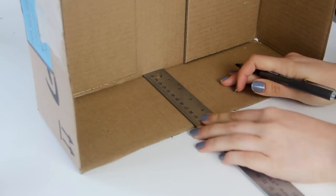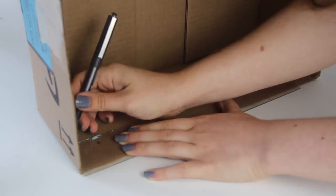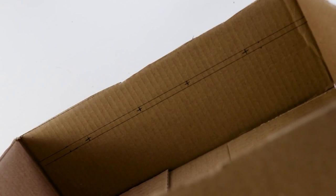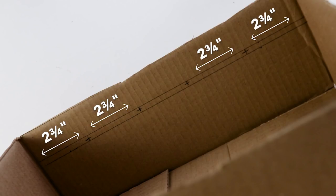Now measure and draw two lines on the long sides of the box. These should be 3 inches up from the bottom and then a quarter inch above that. Then measure and mark 2 ¾ inches from each side of the box so that you have four marks like this.